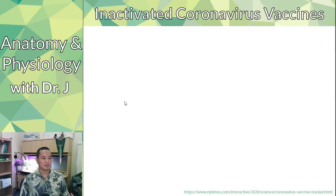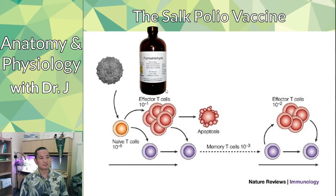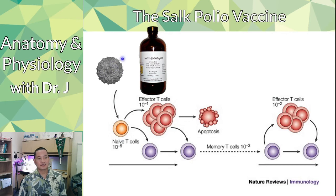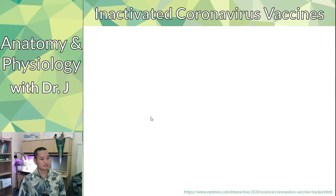Salk used formaldehyde to inactivate the virus, then loaded this inactivated virus into a vaccine. Because the virus retains its overall shape, antibodies can still recognize the surface antigens. By injecting the virus that can no longer replicate, you hopefully generate antibodies that recognize the surface of the polio virus.